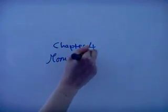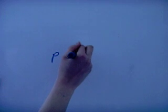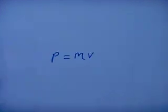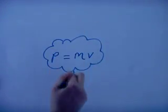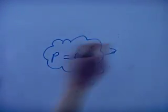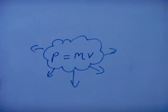Chapter four: momentum. Momentum of a moving object is found by multiplying its mass and velocity. It is a vector quantity, therefore it has a magnitude and direction.